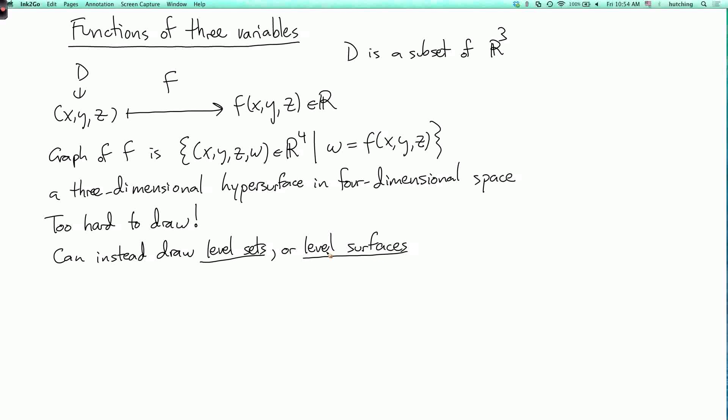So the level surface is, well, you fix a number k, and you look at the set of all points x, y, z in the domain such that f of x, y, z is equal to k. And if we draw some of these surfaces for different values of k, then we'll get a useful visual representation of the function.